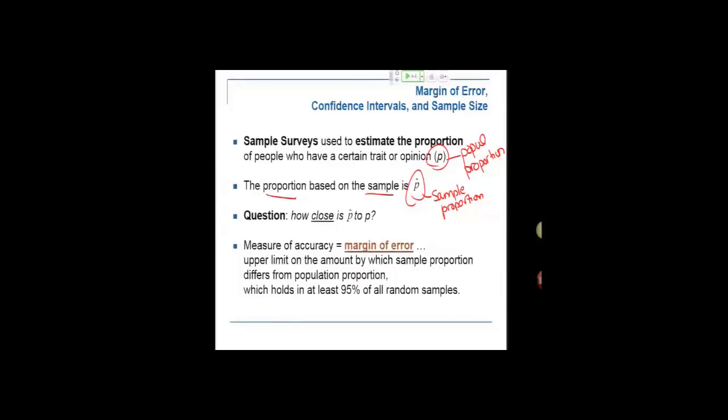Just like last week we were doing mu and x-bar, the population mean and the sample mean, this is the population proportion and the sample proportion. The population proportion parameter, the sample proportion being a statistic. You would like to know how close is P hat to P. How close is the sample proportion to the true proportion?